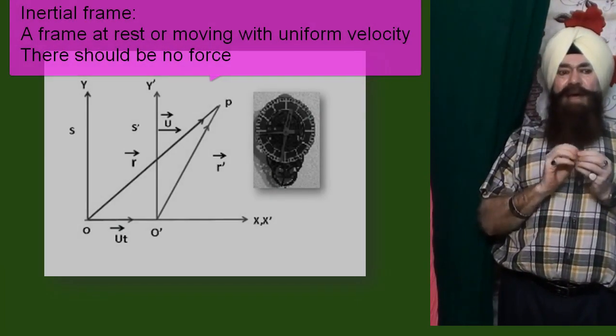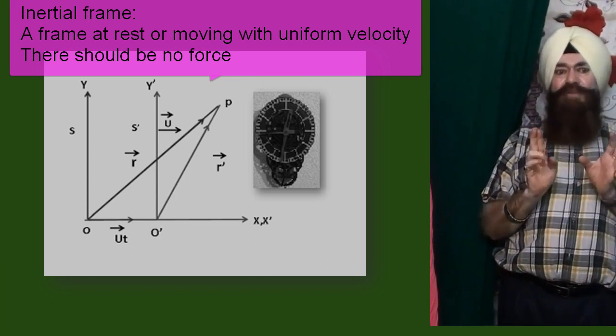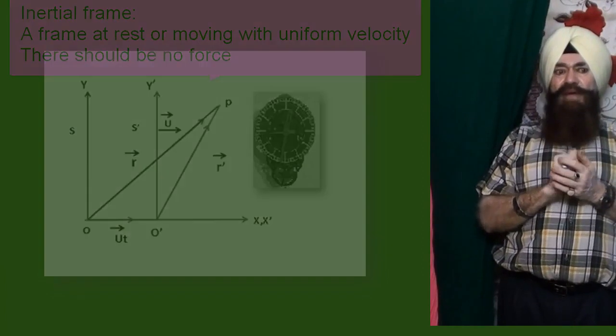An inertial frame is one in which you can close your eyes and you do not feel any force or any acceleration — that is inertial. In other words, an inertial frame is one in which you feel weightlessness. In a gravitational field, an inertial frame is a freely falling frame, because in a freely falling situation we do not feel any weight. And in the absence of a gravitational field, the inertial frame is simply stationary or moving at constant velocity.